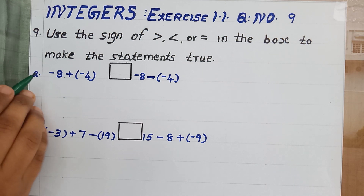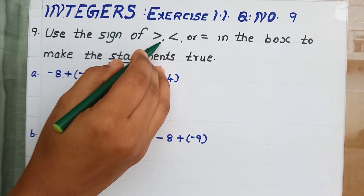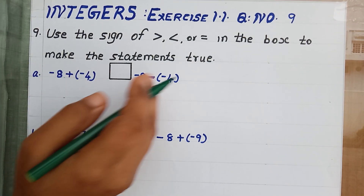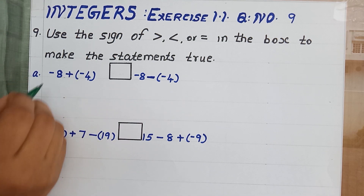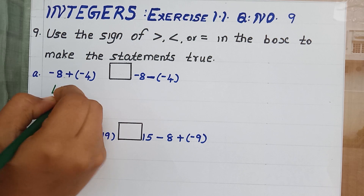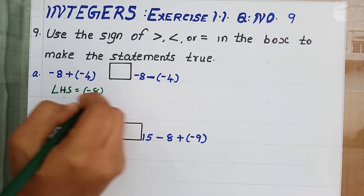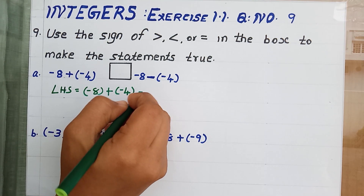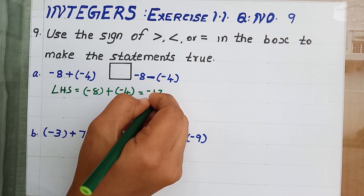For question number A, we should assign any one of the three signs. For assigning these signs, we should find out the LHS and RHS first. LHS means left hand side. LHS is equal to minus 8 plus minus 4. Both are the same sign, so just add and give the negative sign. That gives negative 12.